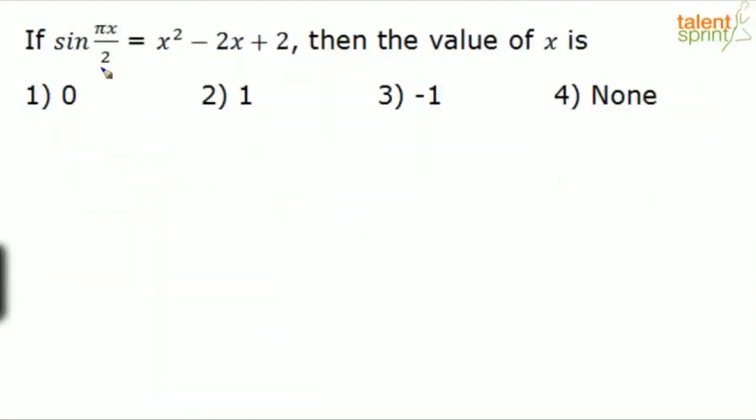If sine pi x by 2 equals x squared minus 2x plus 2, then the value of x is. What does he say? Sine pi x by 2 equals x squared minus 2x plus 2. I am sure I need not tell you how to solve this one. He is asking us to find out the value of x. One equation is given in terms of x. There is one equation given in terms of x. Directly substitute the options here and check which one satisfies.